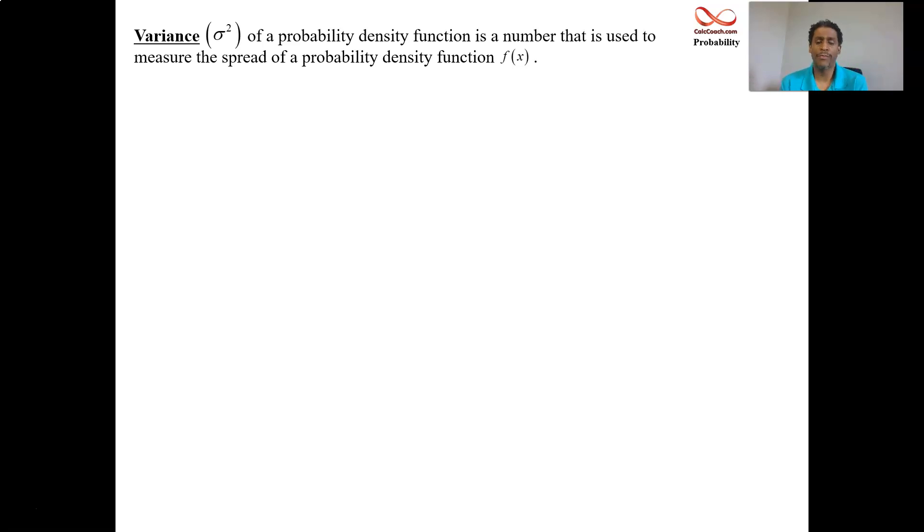The variance symbol is a lowercase sigma squared (σ²). It's a number that's used to measure the spread of the probability density function. There's actually two formulas you can use. One involves the quantity of (x - μ)² multiplied by f(x) integrated from minus infinity to infinity. The other one involves just x² multiplied by f(x) integrated from minus infinity to infinity. After the calculation of that integral is done, you subtract off the mean squared. I prefer the second integral.